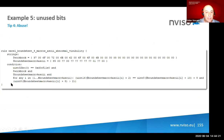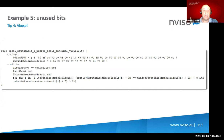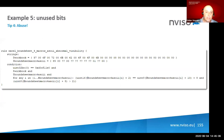I wrote a YARA rule to hunt for this on VirusTotal: instead of looking for a specific value, I look for any byte value and in the condition check if it's larger than two. If it's zero, one, or two — normal cases — it won't alert; for any other value it triggers. I observed actors on VirusTotal testing this. Not just testing — I saw a modified ZLoader spreadsheet where they changed those values and tested all 64 combinations from the six unused bits.